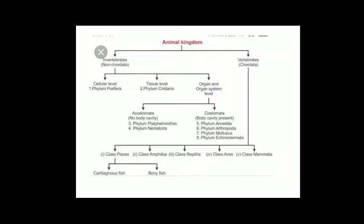Here is a detailed classification of Kingdom Animalia, which is divided into invertebrates and vertebrates. Invertebrates have 8 phyla which includes Phylum Porifera, Phylum Cnidaria (Coelenterata), Phylum Platyhelminthes, Phylum Nematoda, Phylum Annelida, Arthropoda, Mollusca and Echinodermata. Whereas vertebrates have 5 classes: Pisces, Amphibia, Reptilia, Aves and Mammals.